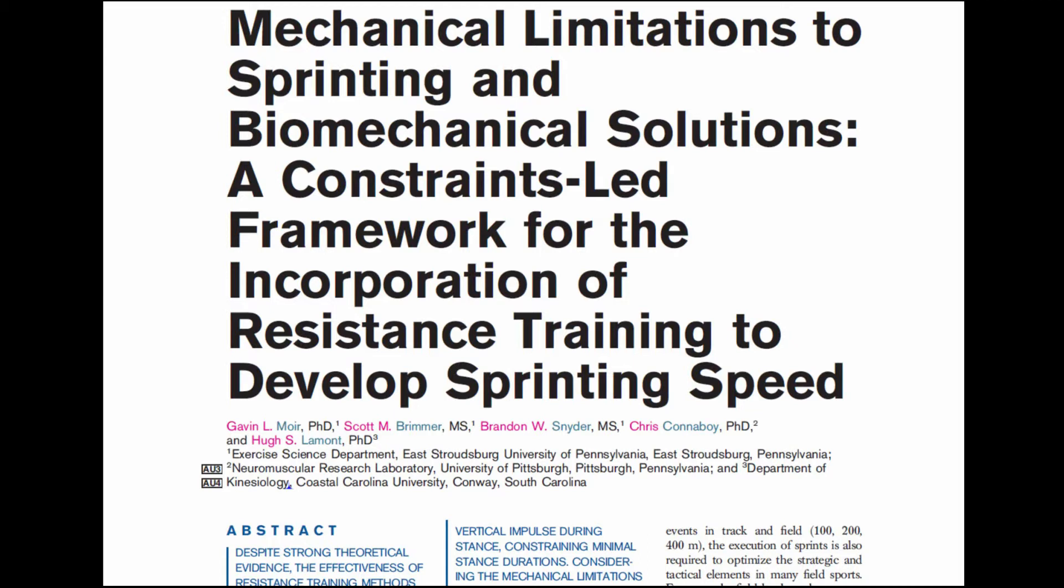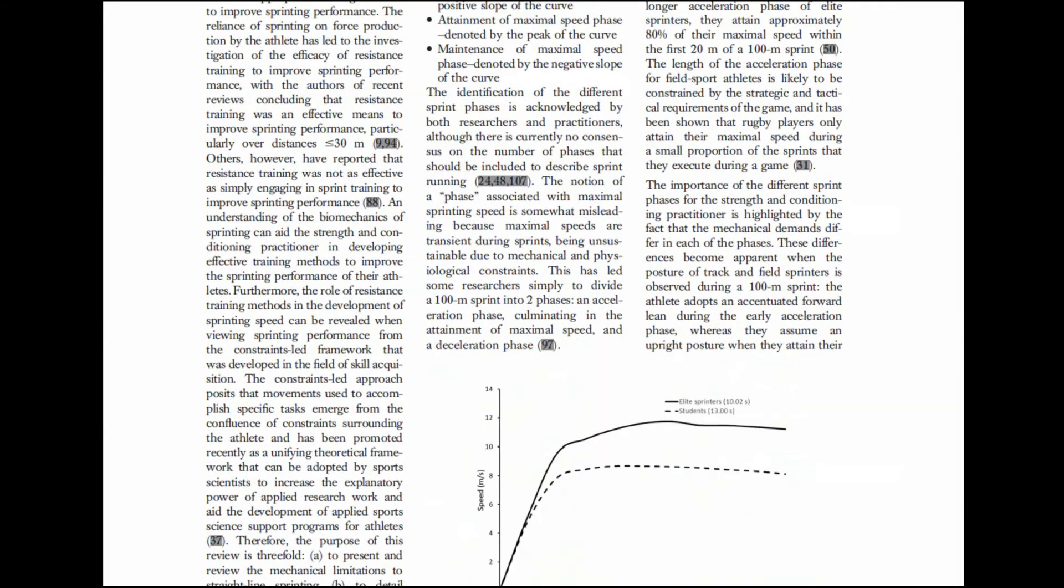The purposes of this article were threefold. We wanted to review the literature and identify the mechanical limitations to straight line sprinting. We then wanted to identify the biomechanical solutions that the fastest sprinters use. And the third and final purpose was to utilize the constraints-led framework to allow us to implement effective resistance training methods to improve straight line sprinting speed.